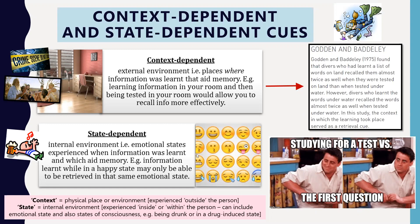In a basic example, information learned when you're in a happy state might only be retrievable when you're also happy. Similarly, sad memories tend to be recalled more easily when you're in a sad state — if you're happy, you're not consciously recalling sad memories. You need that same sad internal environment to retrieve them.